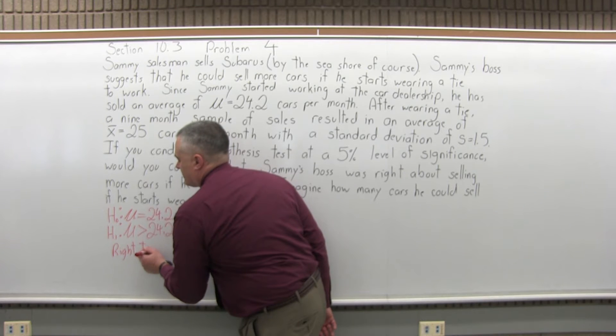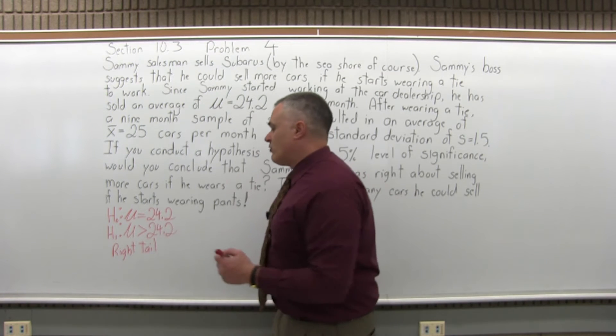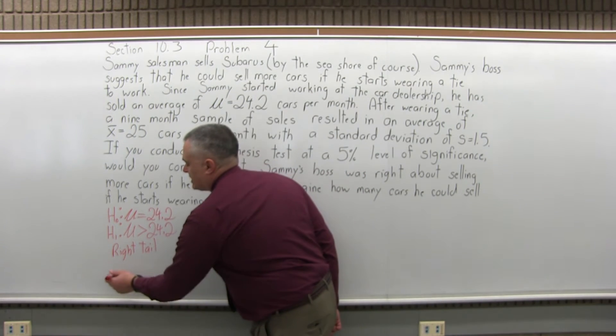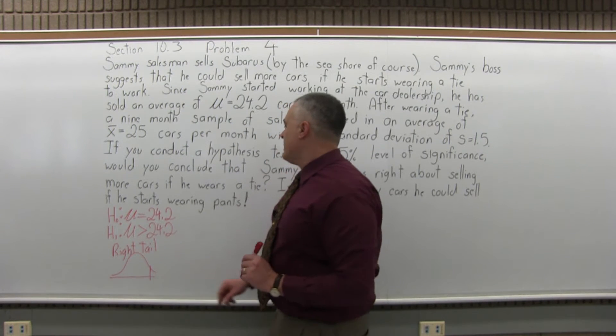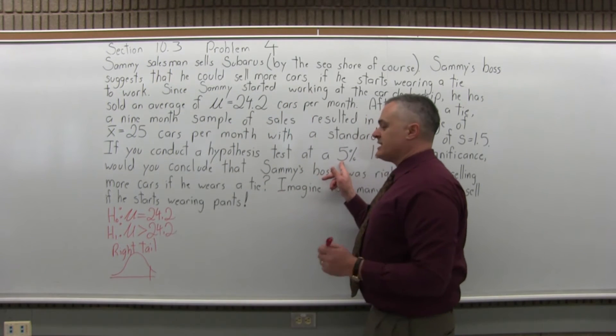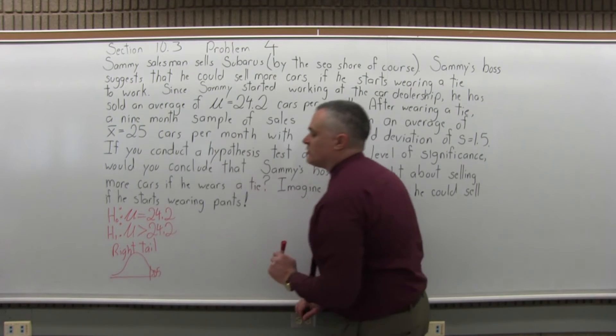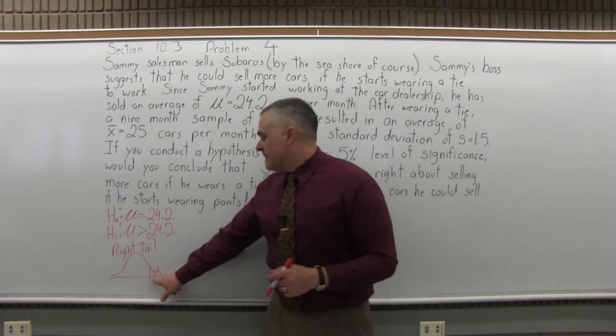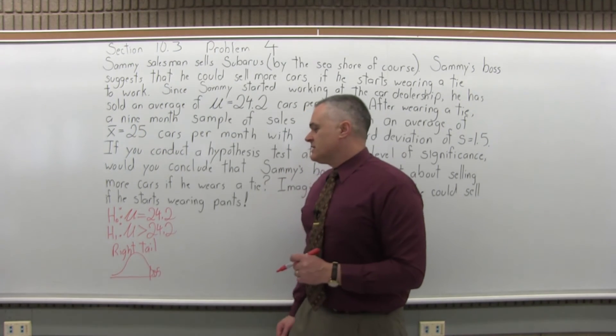So if it pointed to the left, it would be left tail for less than. If it was not equal to, it would be two tail. Right tail means our critical region will be in the right extreme end of the graph, and the right 5%, because that's the level of significance they tell us to use. So we want to see if our computation is going to put us in that rightmost 5% when we figure it out. That's step three.